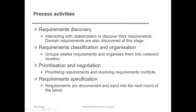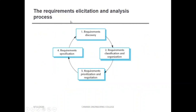In requirement specification, requirements are documented and input into the next round of the spiral. The documentation is passed to the next round, and if any problems occur in the requirements they are addressed. This cycle — requirement discovery, classification and organization, prioritization and negotiation, and specification — keeps repeating until the proper output is achieved.